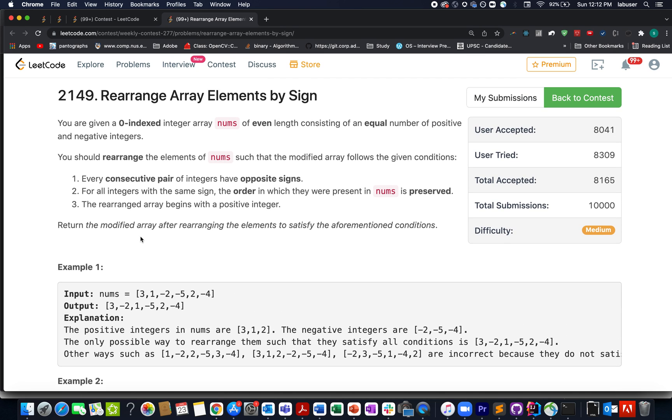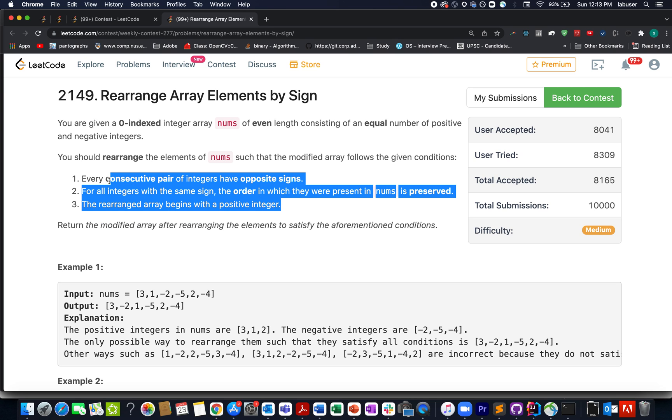What we need to do is rearrange this input array such that every consecutive pair of integers have opposite sign. That means the first one should be positive, next one should be negative, followed by positive, negative, positive, negative. For all the integers with the same sign, the order in which they are present should be preserved. The rearranged array should always begin with a positive integer. We need to return that modified array after we are done with the rearrangement.